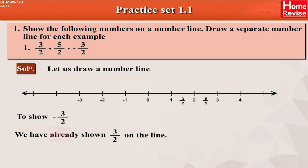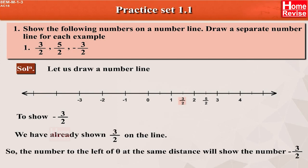To show minus 3 upon 2, we have already shown 3 upon 2 on the line. So, the number to the left of 0 at the same distance will show the number minus 3 upon 2.